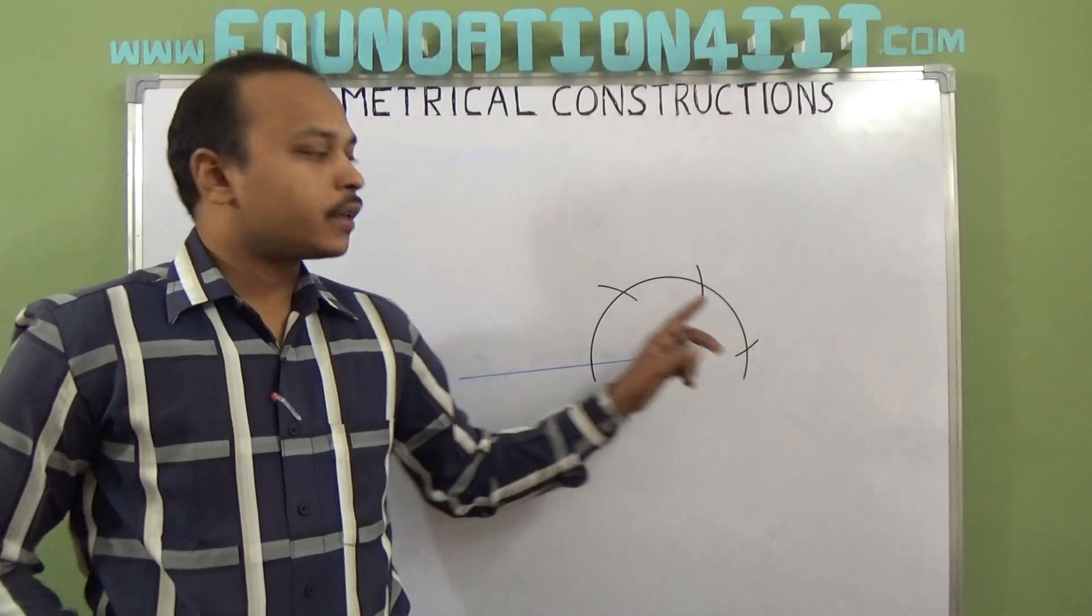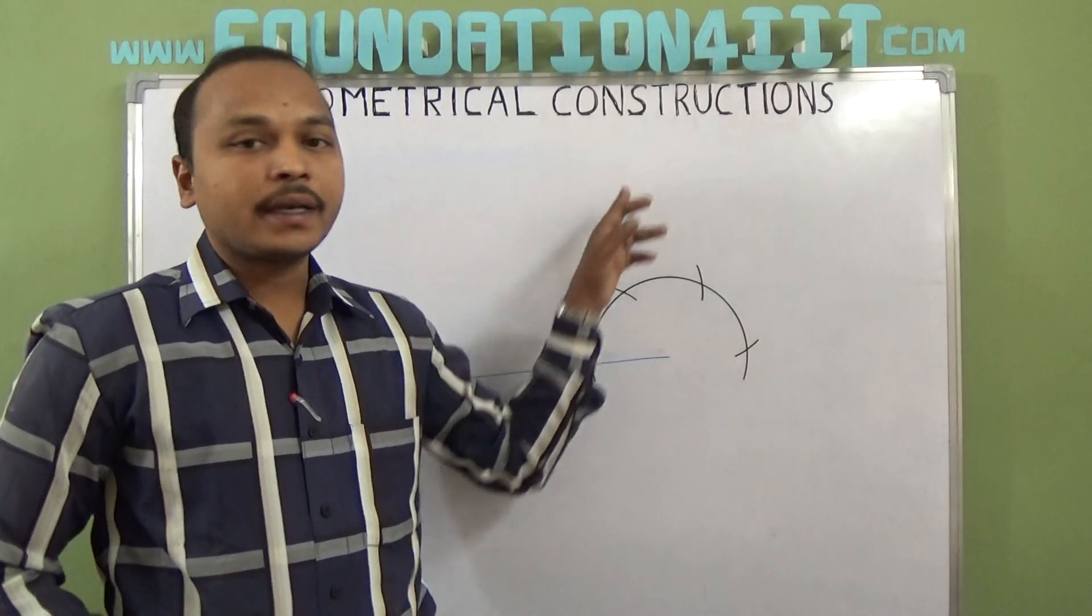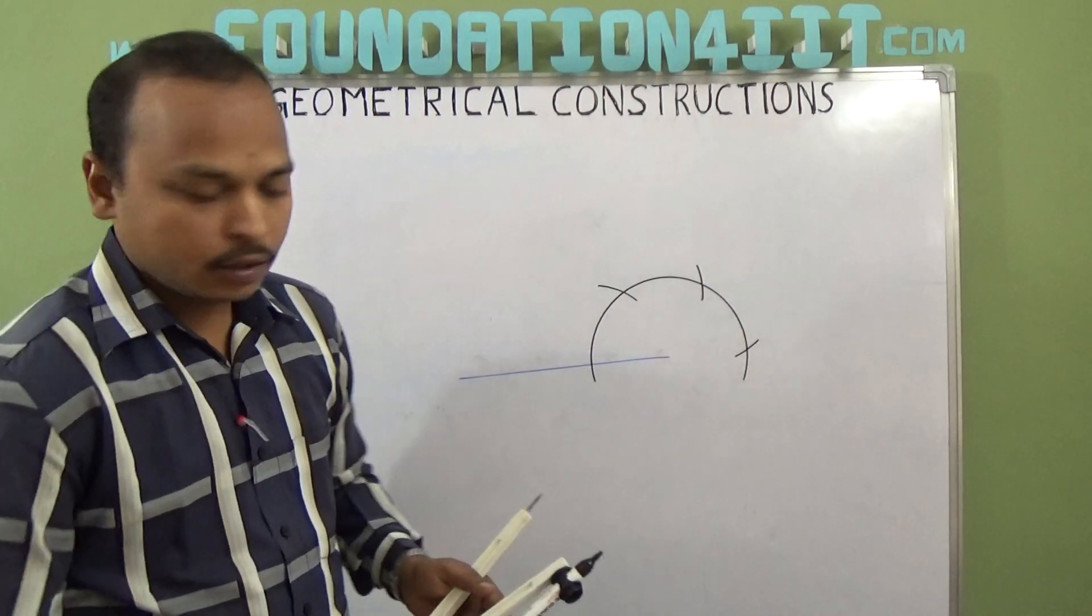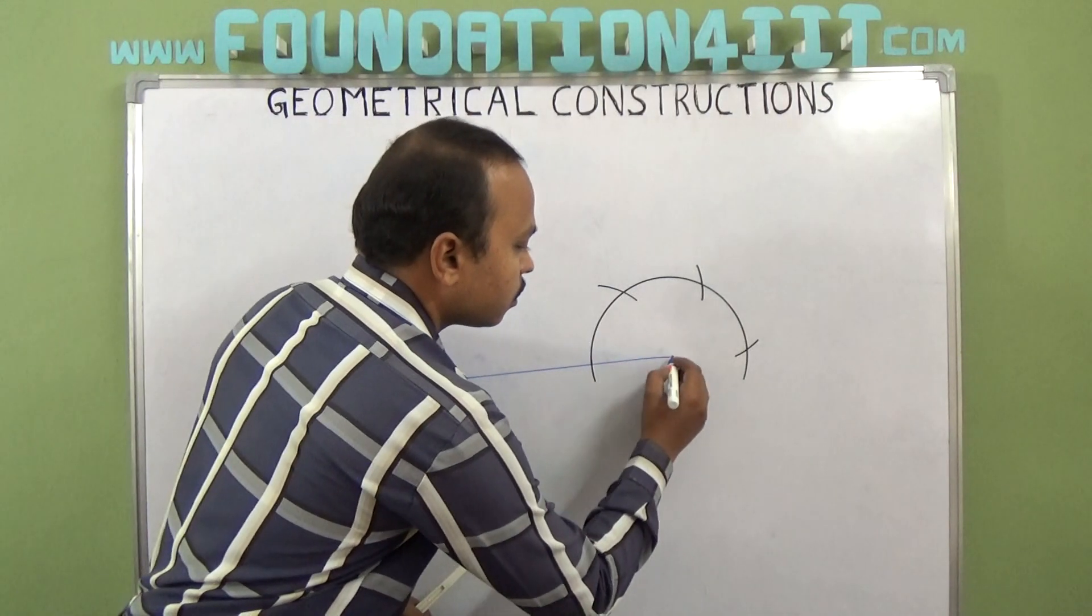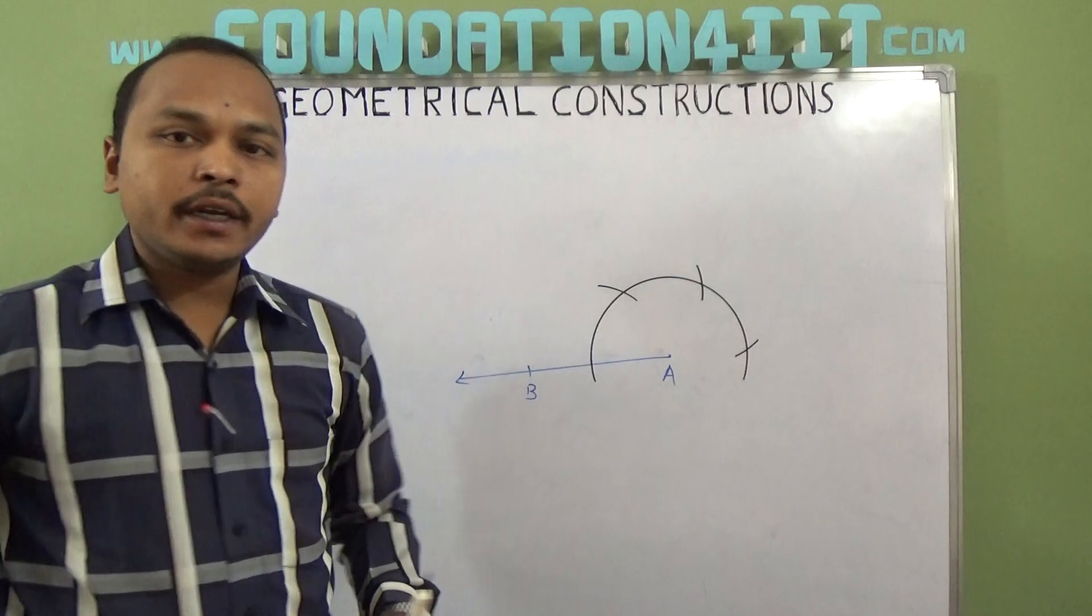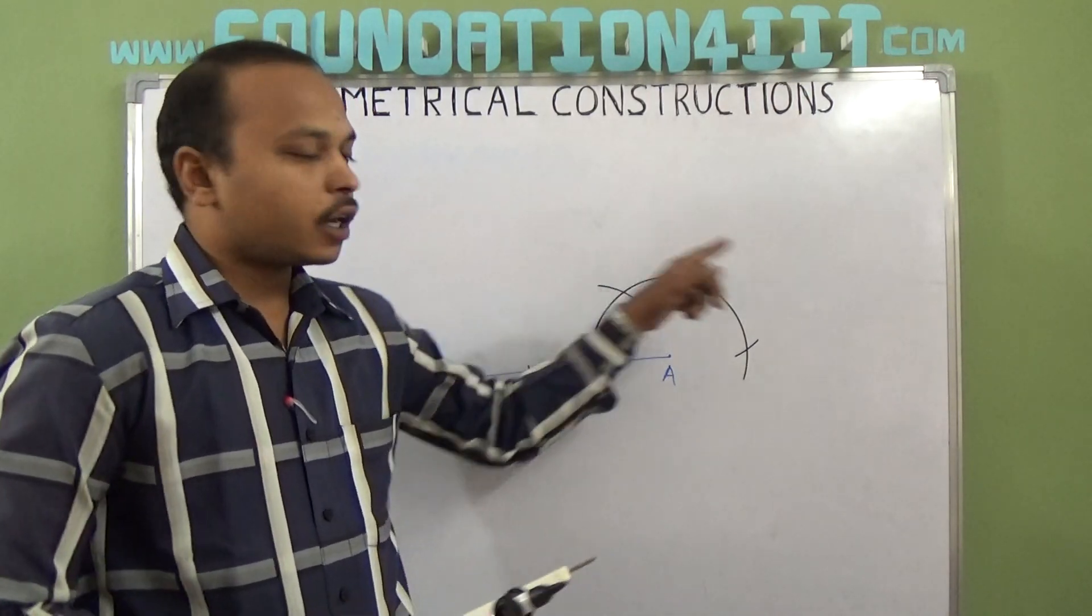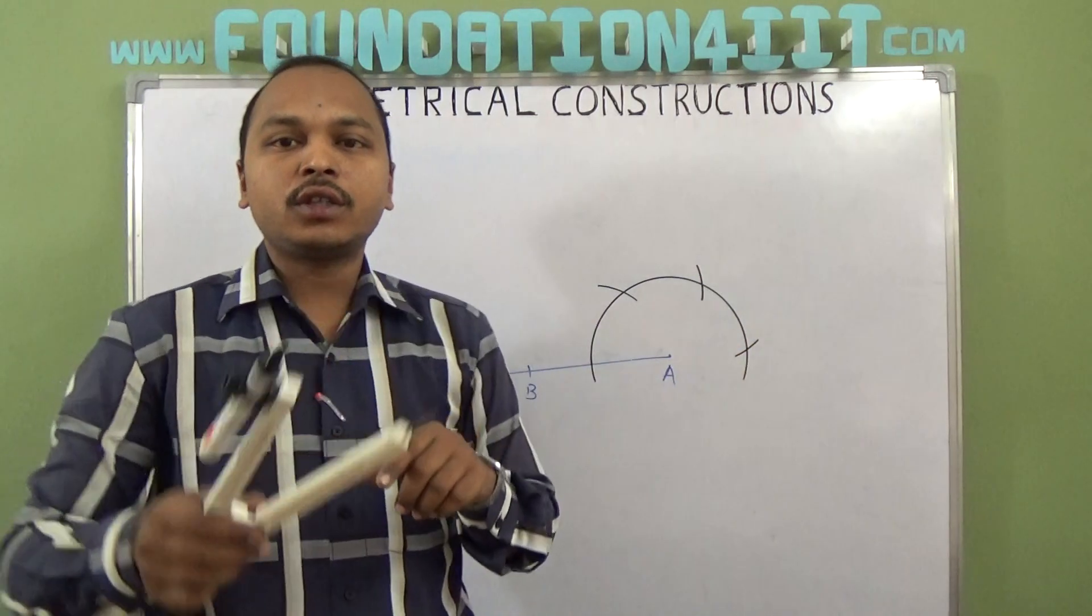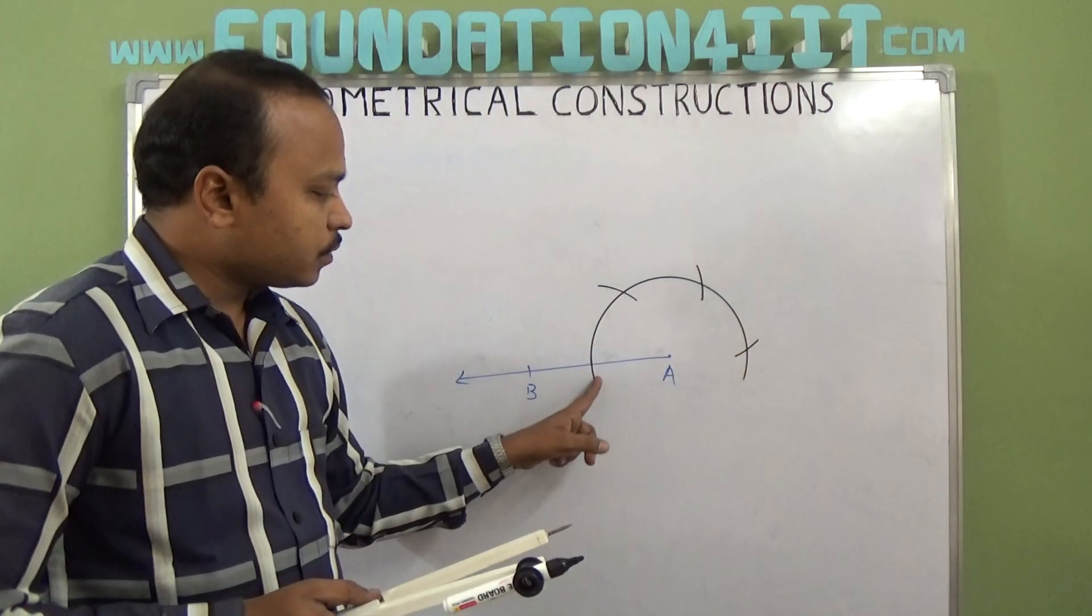Now 0 and 180, if I bisect, then 90 will come. At this point, this is the point A, so at the point A I need 90 degrees. If I draw an arc first 60, 120, and 180, three arcs. Now from 0 and this is 180, 0 and 180 I have to bisect.